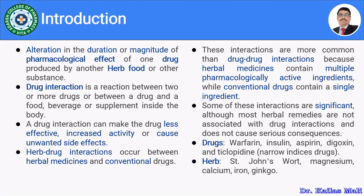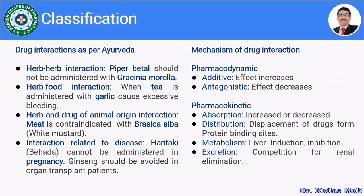We will discuss the details later on. With this brief introduction, let us move towards the classification of herb-drug and herb-food interactions. There are two classifications shown. One is according to Ayurveda, and the other is according to the mechanism of interaction. According to Ayurveda, drug interactions are classified as herb-herb interaction, herb-food interaction, herb-drug interaction, and interaction related to disease.